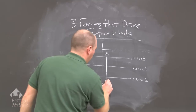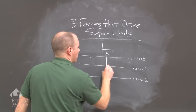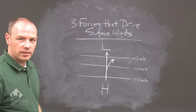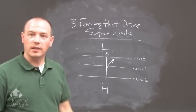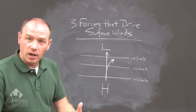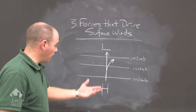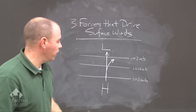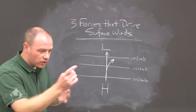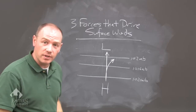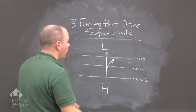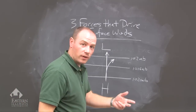Then we add Coriolis. It causes the winds to move to the right, because Coriolis is Earth's rotational influence on an object not attached to the Earth — in this case, wind. Moves to the right in the Northern Hemisphere; in the Southern Hemisphere, to the left.